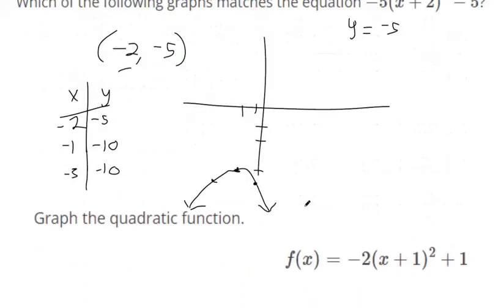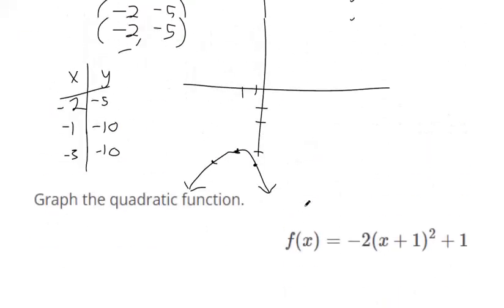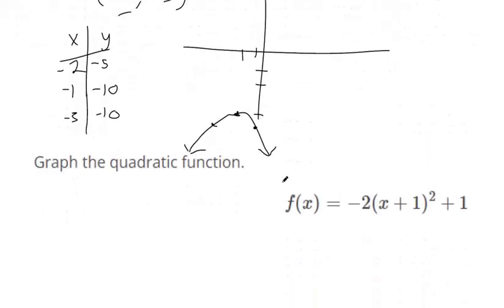Okay. So that's how you want to graph them. Find that vertex first and then use the leading coefficient to help you determine whether it's going to make a U or an N. This one's also going to be an N.